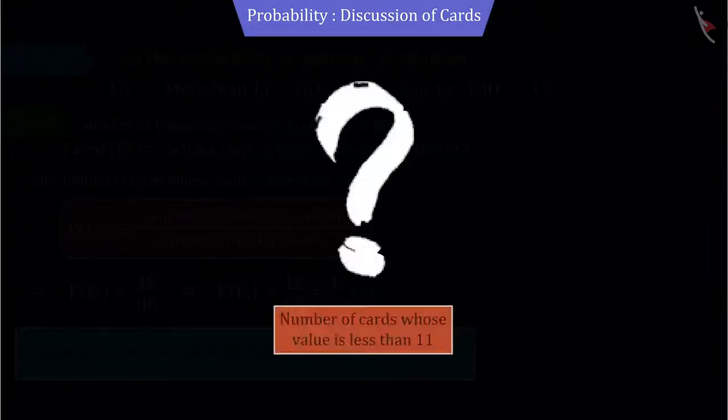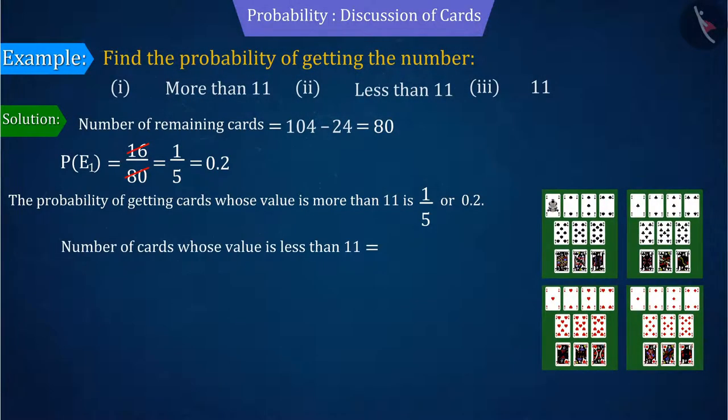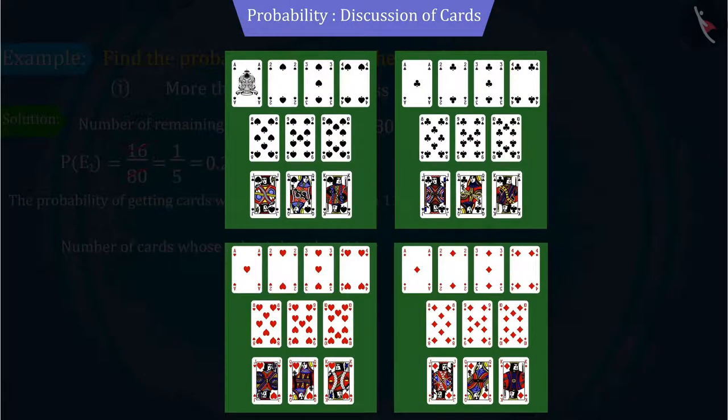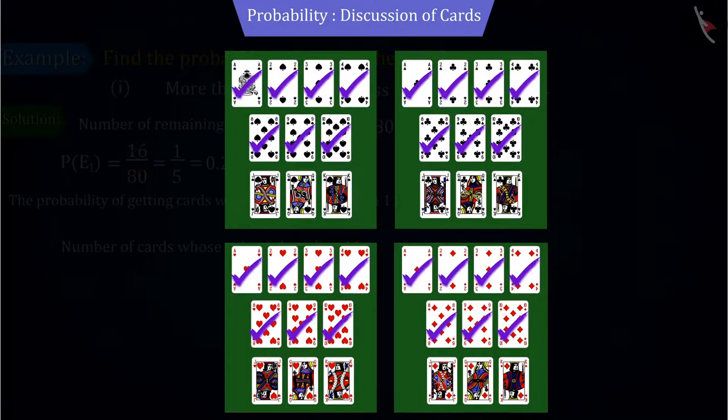Similarly, if we discuss another event, you can see that the number of cards with values less than 11, i.e. 1, 2, 3, 4, 8, 9 and 10, are 56.